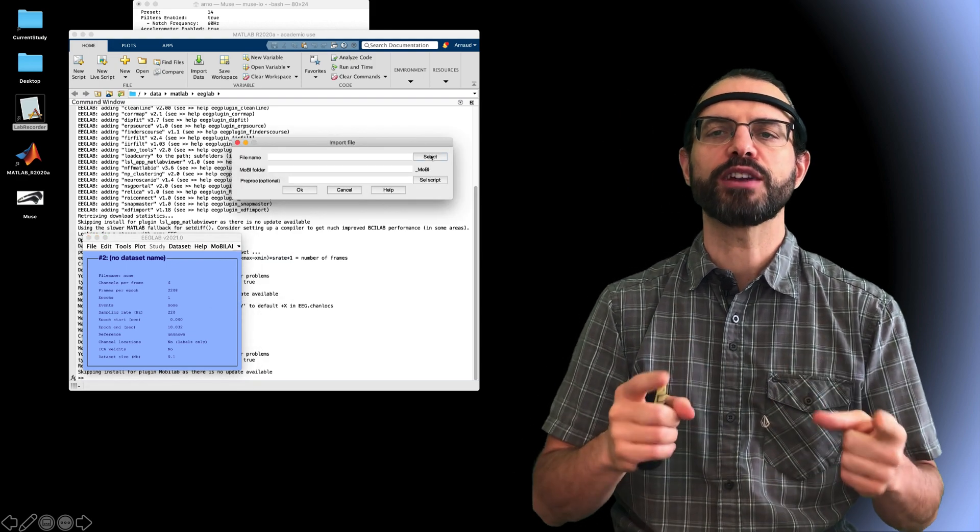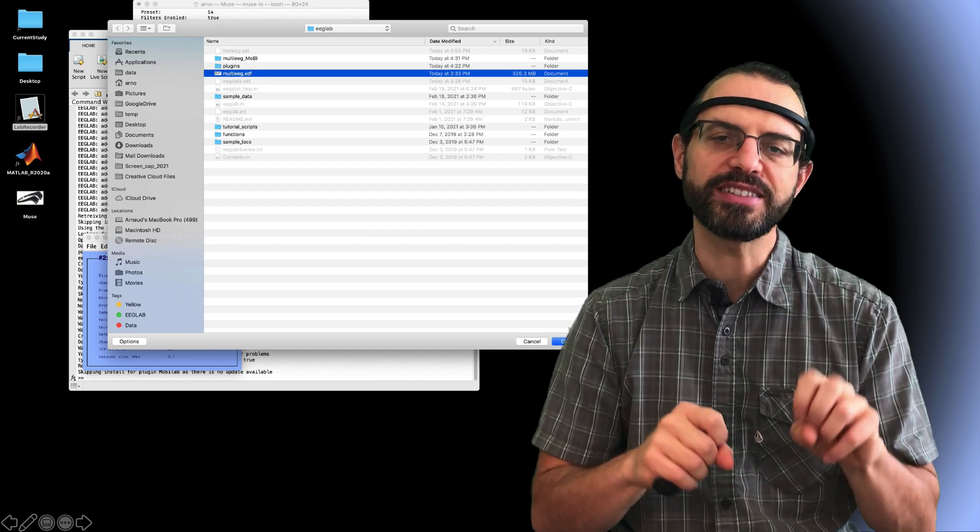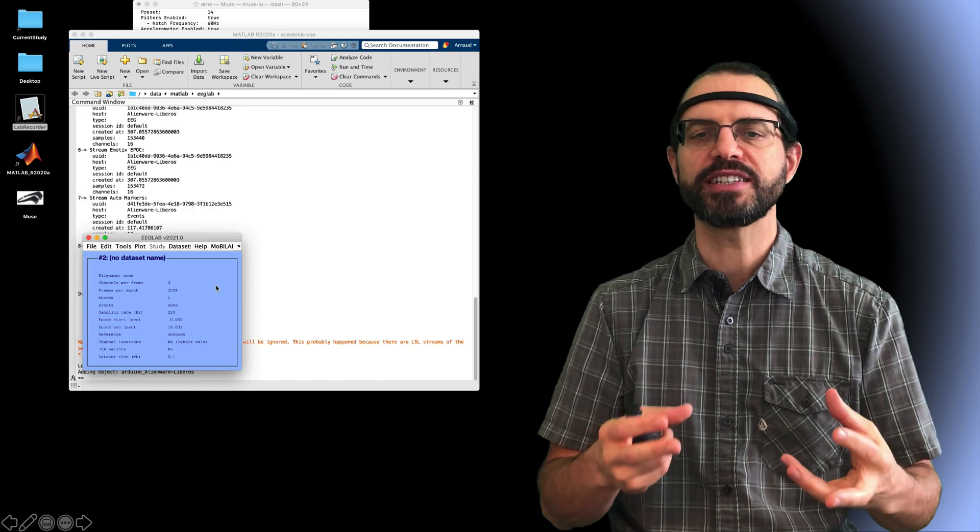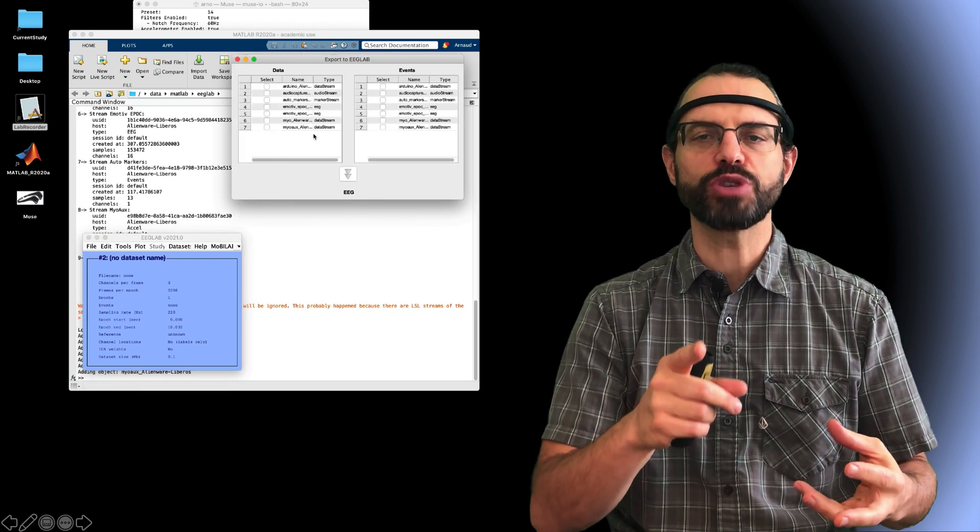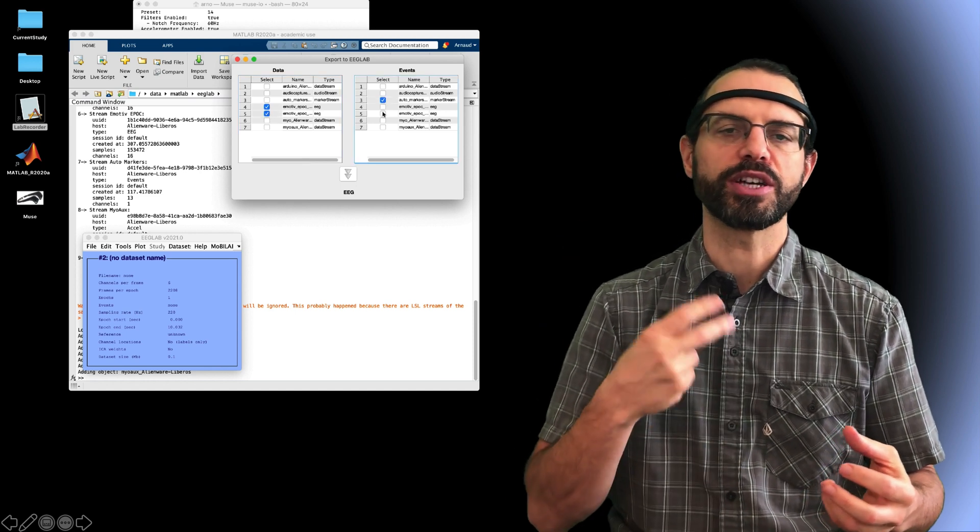So, here I'm going to select a file with multiple streams. This is actually synchronizing two EEG headsets and we also have event streams and other synchronized devices. I will select the two EEG streams in the right column and the event stream in the left column and then press OK.